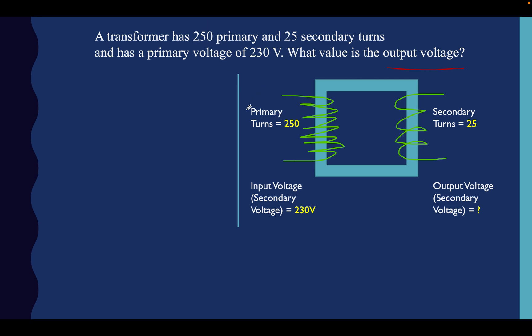So 250 primary turns, we're looking at that here. 25 secondary turns, we're looking at that over here. So straight away, we can see that it's a step down transformer. So we're expecting this voltage to go down for this second side. So when we're looking for the output voltage, we're looking for this number to be lower than this number because it's a step down transformer.